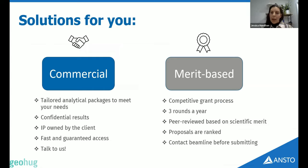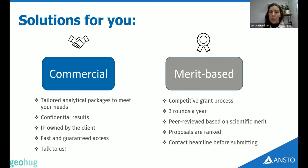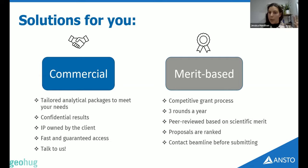When people come to us wanting to do experiments, there are two main access modes. There's the merit-based process — a competitive grant process where you submit an idea, it gets peer-reviewed and scored, and the highest-ranked proposals get awarded beamtime based on scientific merit. It's competitive, so if you've got an idea, definitely talk to us and we can guide you through that process. The other main way is through the commercial process — this is what you'd use if you want guaranteed time. You can get what you need to complete your project, and it's also confidential, so you keep all the IP.